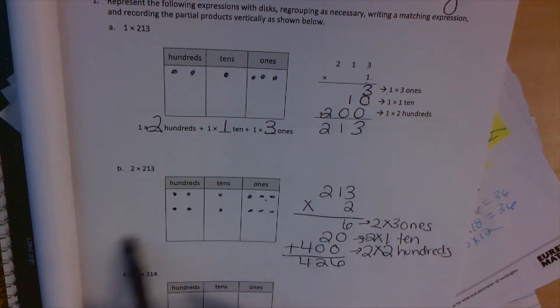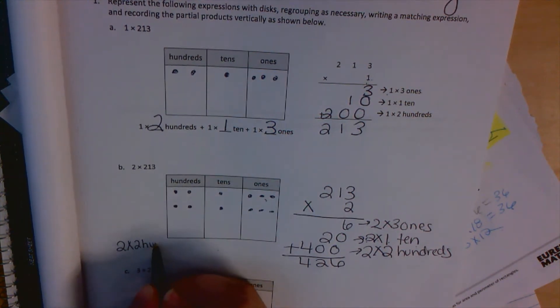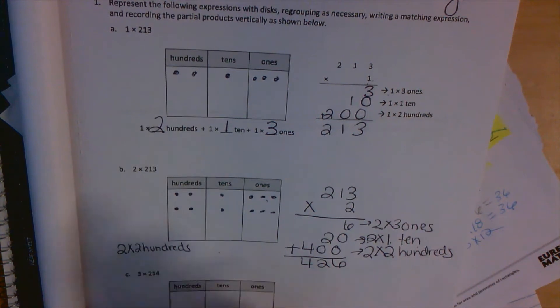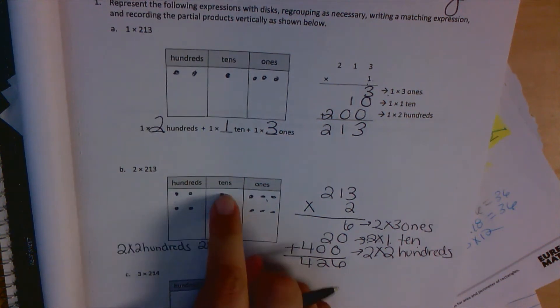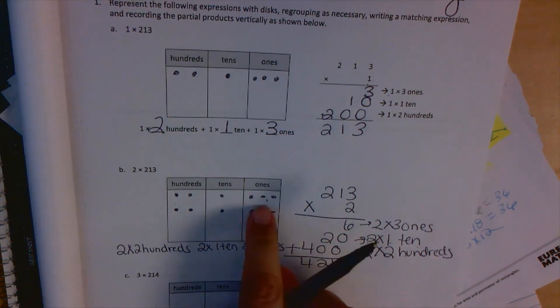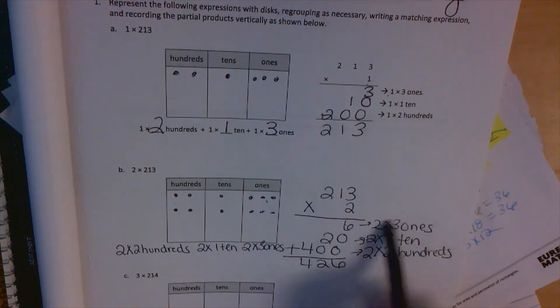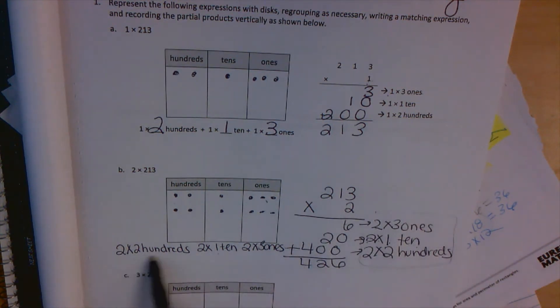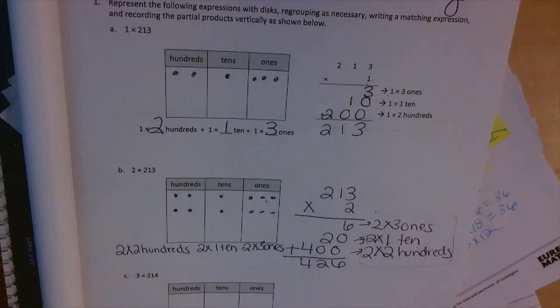You could, if you'd like, rewrite it down here. 2 times 2 hundreds, because it's 2 hundreds, 2 times. 2 times 1 ten, because it's 1 ten, 2 times. And 2 times 3 ones, because it's 3 ones, 2 times. However, it is the same as what we wrote here. It's just correlating these for you so you understand how they got that.